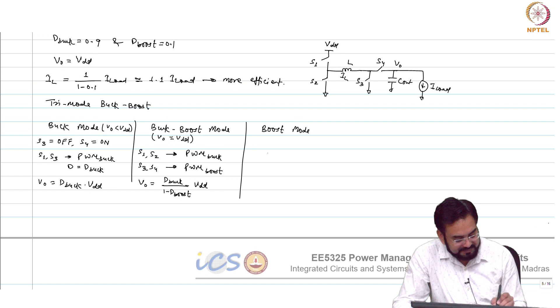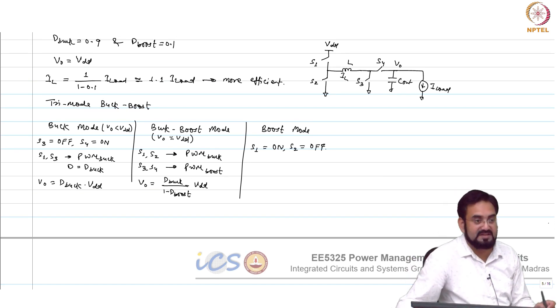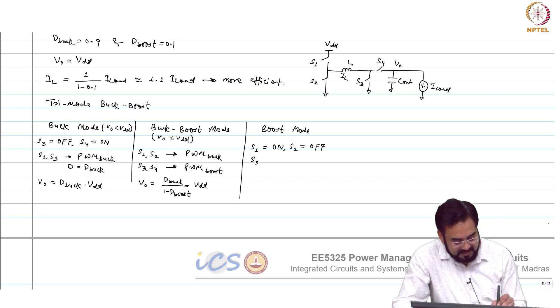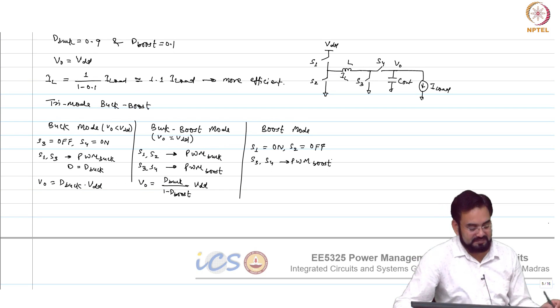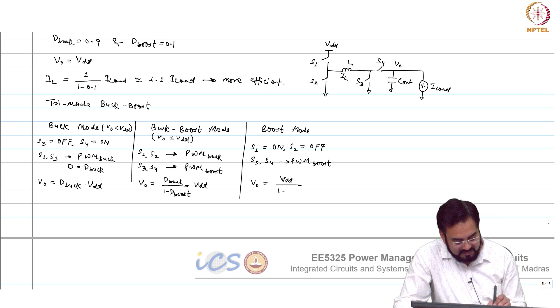What about this case? S1 is always on, S2 is always off. Now it is looking like conventional boost converter where S3, S4 is PWM boost and your V out is V dd over 1 minus dboost.